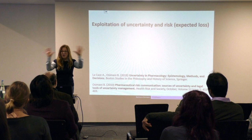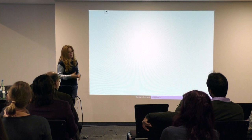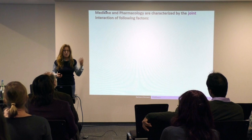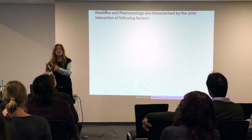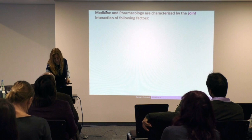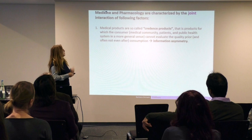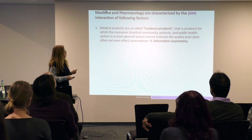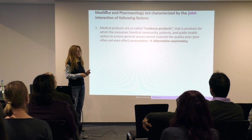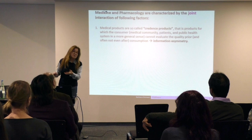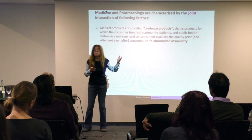Because of these dimensions, I try to characterize medicine and pharmacology along dimensions that should jointly inform medicine with respect to other scientific disciplines like physics, biology, or economics. Medical products are so-called credence products — products for which the consumer, the medical community, patients, and the public health system cannot evaluate quality prior to and often not even after consumption. So there is a strong information asymmetry. It's a cascade of information asymmetry: a patient knows almost nothing, a doctor a little bit more, the pharmaceutical industry a little bit more, but nature knows best.